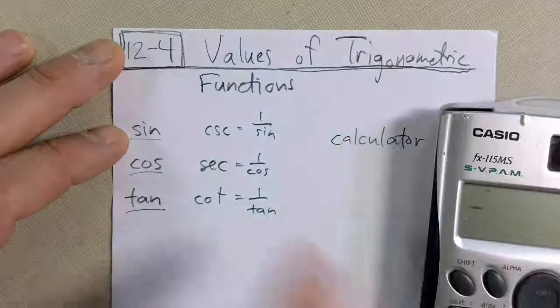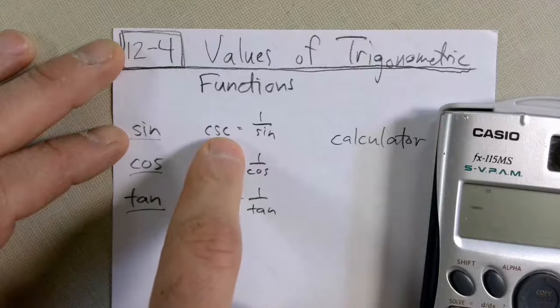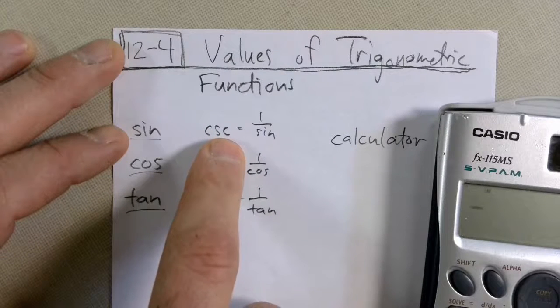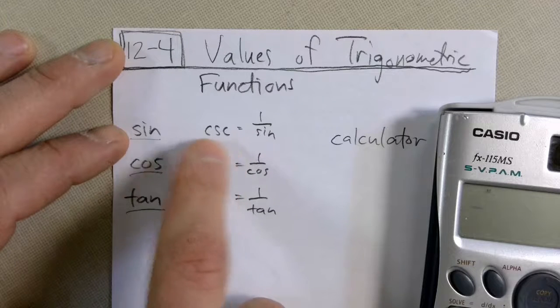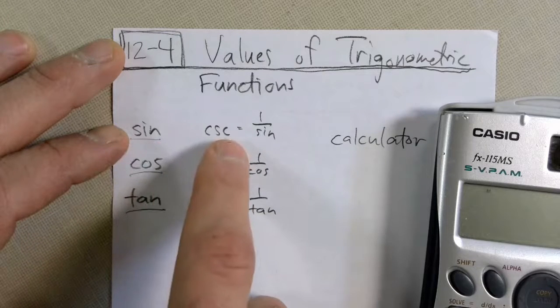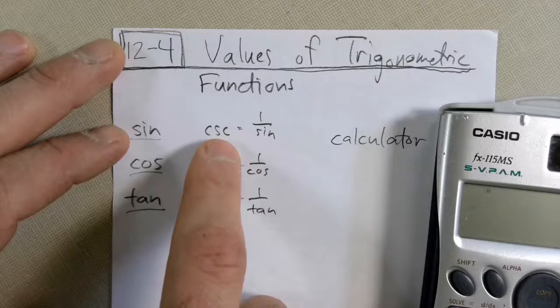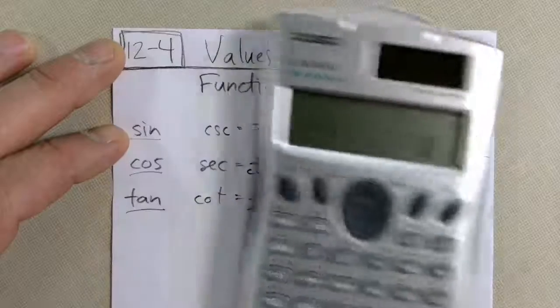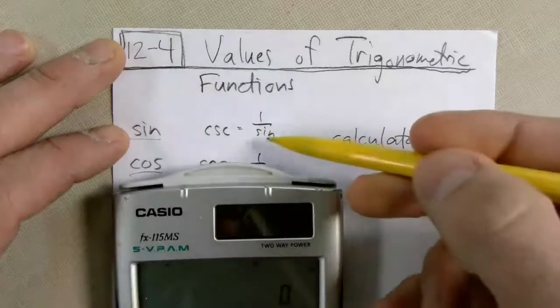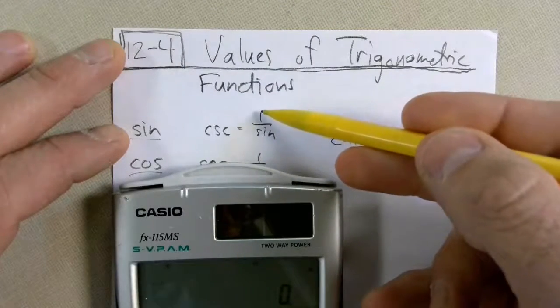Now, what happens if you need one of the reciprocal functions? The sine has as its reciprocal function, cosecant. There is no cosecant button. So, what you're going to do instead is find the sine of it and then do the reciprocal, one divided by that.